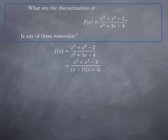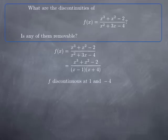Because the function f is a rational function, we know that it is continuous at every point of its domain. In other words, the only discontinuities are the points not in the domain — those are the zeros of the denominator. The denominator factors as (x - 1)(x + 4), and therefore we have two discontinuities: x = 1 and x = -4.